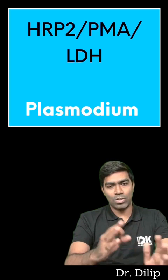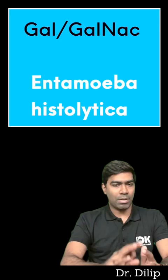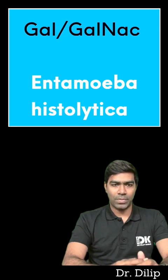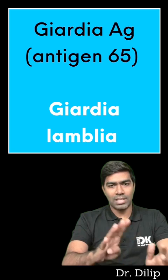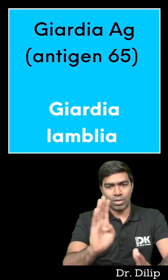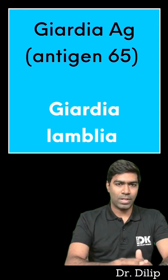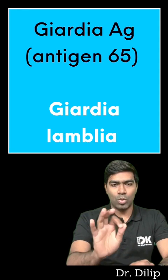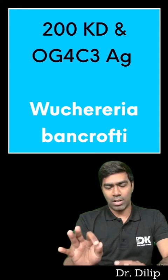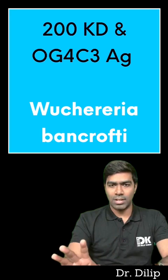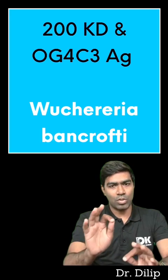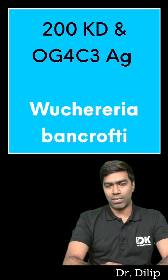Number 3: Galactose-GalNAc antigen for Entamoeba histolytica. Number 4: Giardia antigen or antigen number 65 for Giardia lamblia. Number 5: 200 kilodalton or OG4C3 antigen — it is going to help us diagnose Wuchereria bancrofti infection. Thank you.